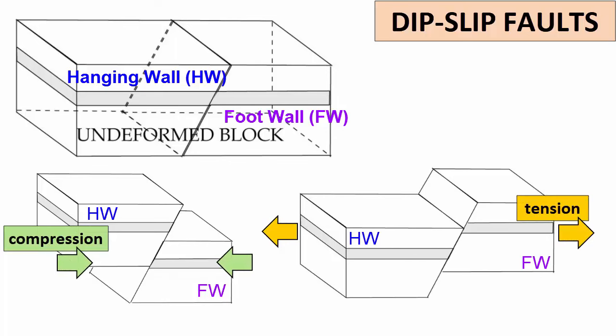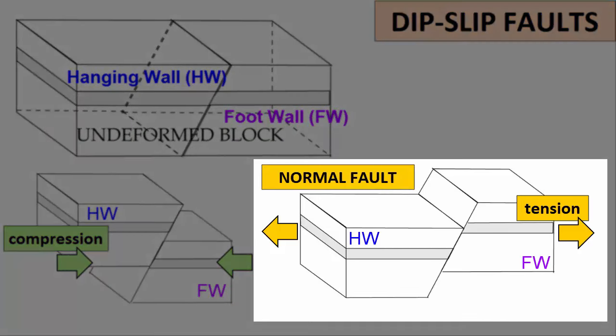Faults are further classified by the stresses applied and the motion of rocks on one side of the fault relative to the other. Normal faults are dip-slip faults caused by tension. As tension stress pulls the rocks apart, gravity pulls down the hanging block. Therefore, normal faulting gets its name because it is a normal response to gravity. If the hanging wall has moved downward in relation to the foot wall, then the fault is a normal fault.